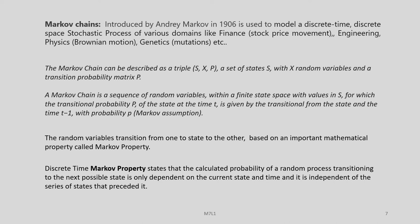This time t minus 1 is important for the next event. The random variables transition from one state to another based on an important mathematical property called the Markov property. The discrete-time Markov property states that the calculated probability of a random process transitioning to the next possible state is only dependent on the current state and is independent of the series of states that preceded it.